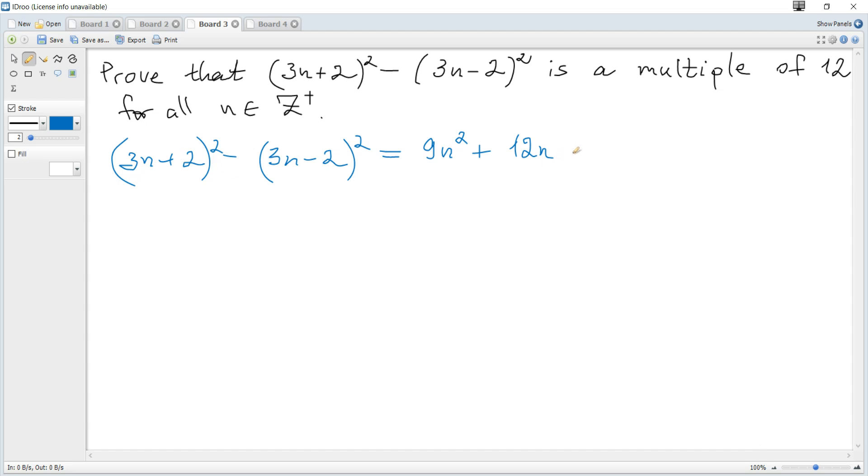And minus (a-b)² is a² - 2ab + b². It becomes 9n² together with minus, so minus 9n² minus 12n, together with this minus it's plus 12n, and plus 4 with minus so minus 4.